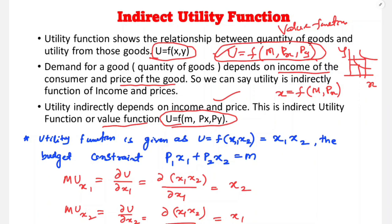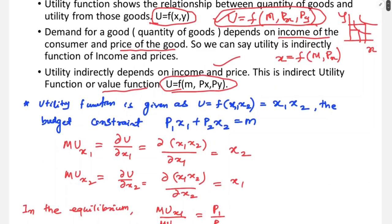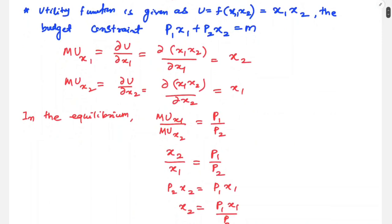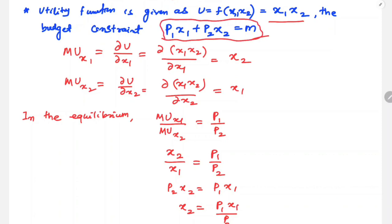Now let's derive the indirect utility function. A question type: the utility function is given as U = f(x1, x2) = x1 · x2. The budget constraint is: p1·x1 + p2·x2 = M, where p1 is the price of good x1, p2 is the price of good x2, and M is money income.